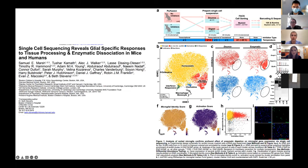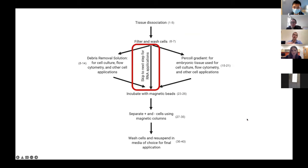After tissue dissociation, however you choose to do it, we generally have three distinct workflows depending upon downstream applications and input material. The simplest is when we are only caring about RNA applications such as simple qPCRs, and what we care most about in this case is speed — we simply skip a lot of the cleanup steps.